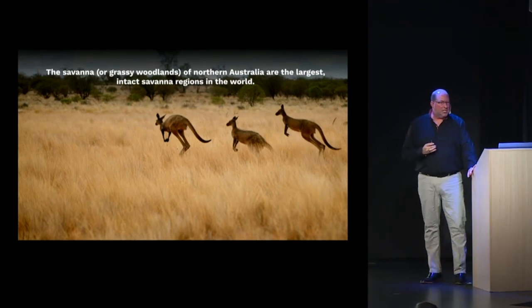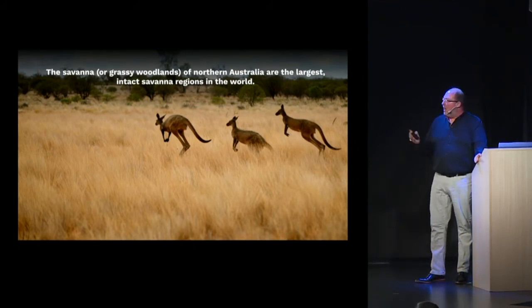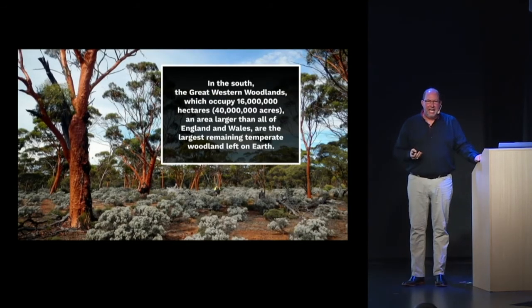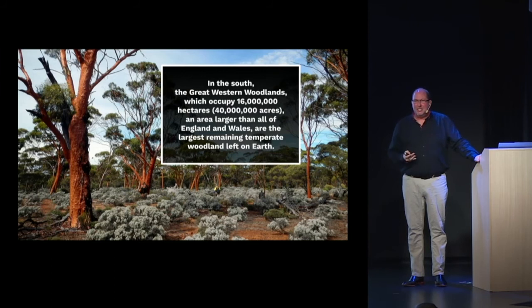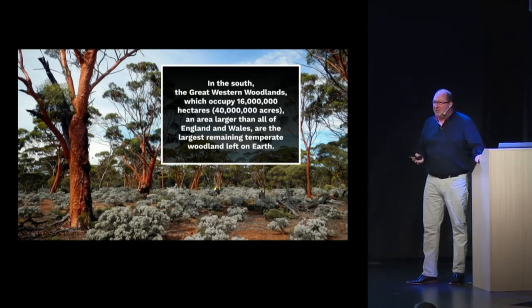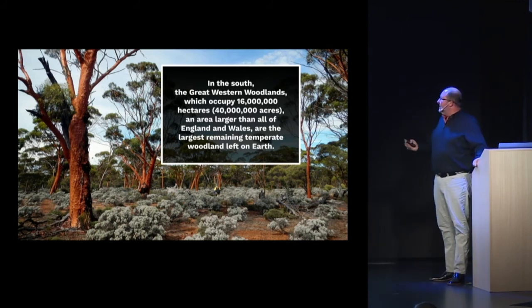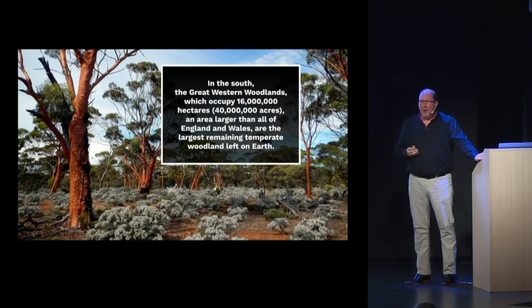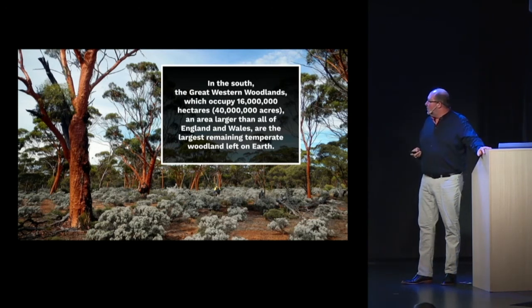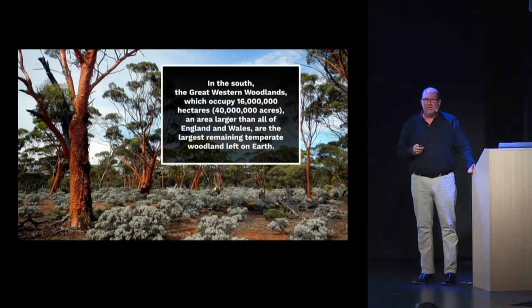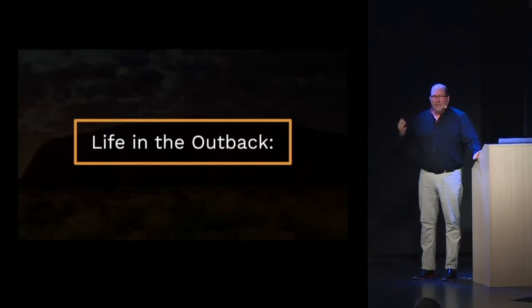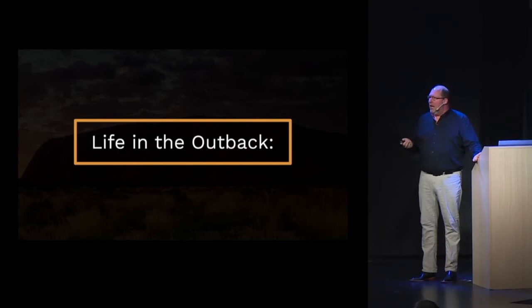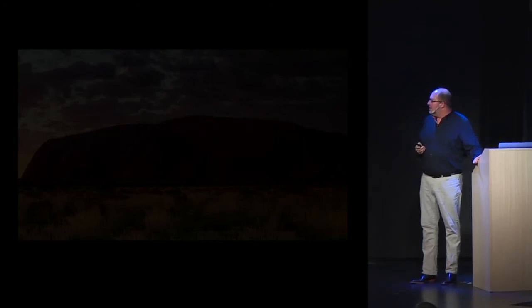The savanna or grassy woodlands of northern Australia are the largest savanna regions in the world — you can't help but see kangaroos by the thousands and tens of thousands. In the south, the great western woodlands occupy 16 million hectares, an area larger than all of England and Wales, making them the largest remaining temperate woodlands on earth.